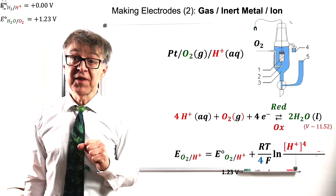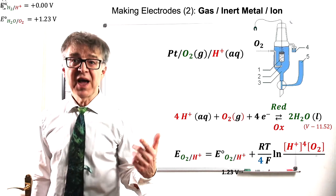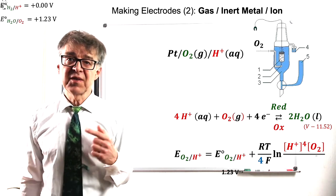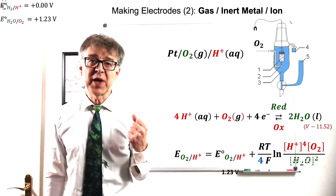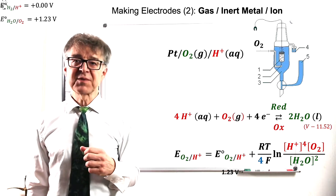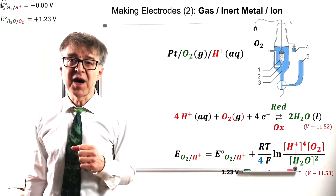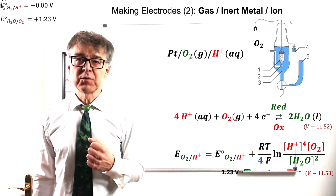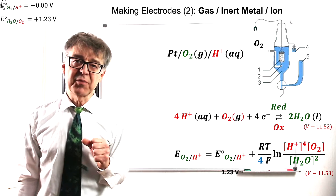The Nernst factor does have to include the four exchanged electrons. In the argument of the logarithm, we find the proton concentration to the power of 4 and the oxygen concentration in the numerator. In the denominator, we find the water concentration squared. The proton concentration must be given in moles per liter. The oxygen concentration is simply the partial pressure in bar. For water, the mole fraction would have to be used, but this can be set to 1 in good approximation.